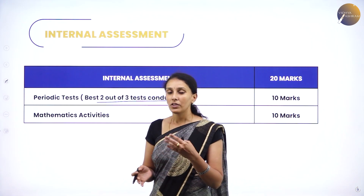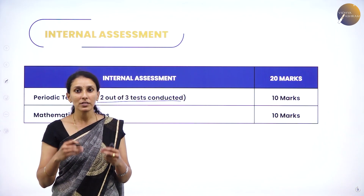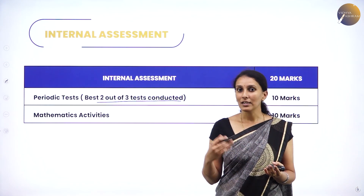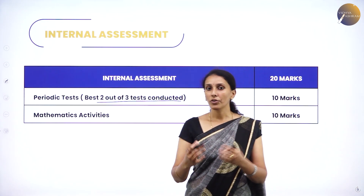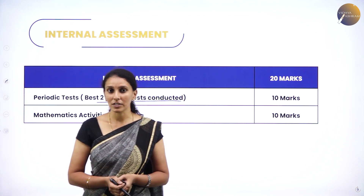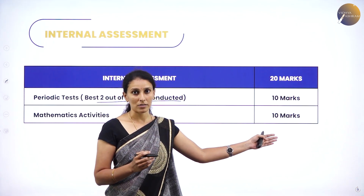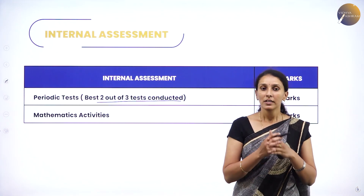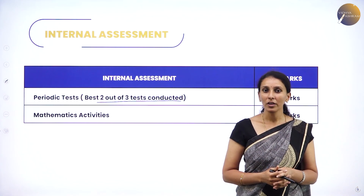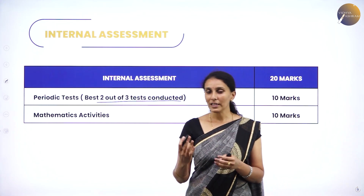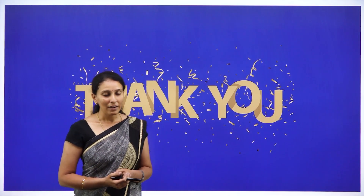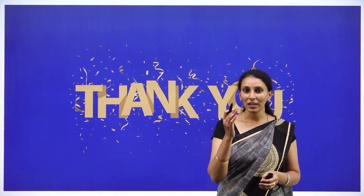The remaining 10 marks of internal assessment come from mathematics activities completed in the mathematics lab. You will maintain a record of your mathematics activities — similar to practicals in Physics, Chemistry, and Biology — from the NCERT prescribed manual. So internal assessment is 20 marks and the exam paper is 80 marks, totalling 100 marks. With 100% confidence, let's start Class 12 Mathematics — in the next session I will take concept classes for each lesson. Keep watching, keep learning, keep exploring!